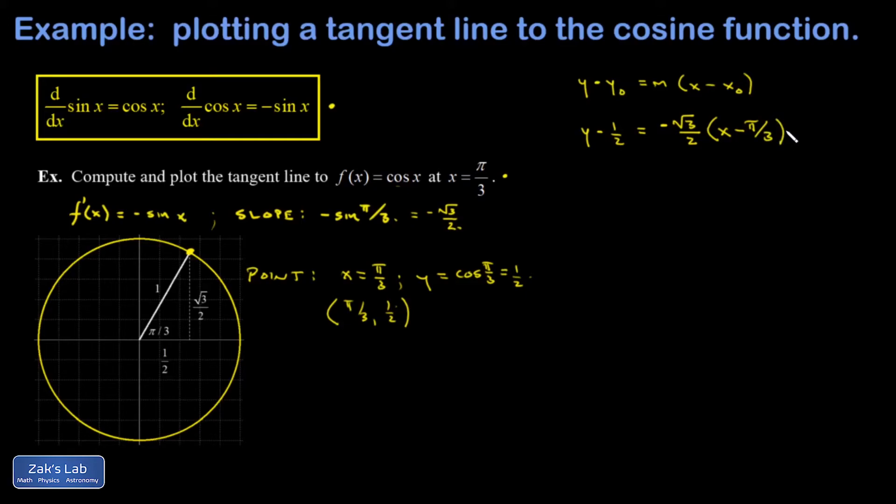In order to plot this, I'm going to have to solve for y so that I can communicate with my graphing software. So I'm going to clean things up a little bit and solve for y. I'm going to distribute the negative root 3 over 2. And I get negative root 3 over 2 times x plus root 3 pi over 6. And then I'm adding a half to both sides, so plus 1 half.